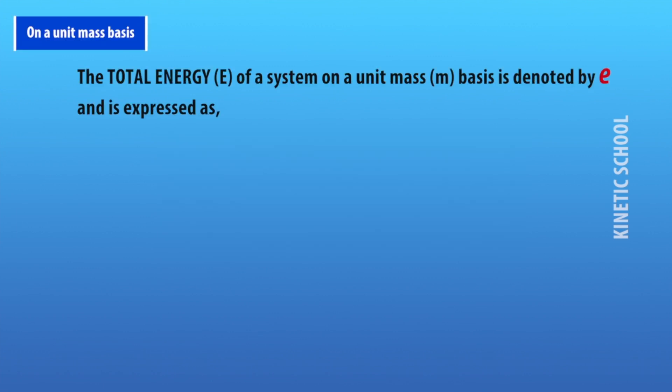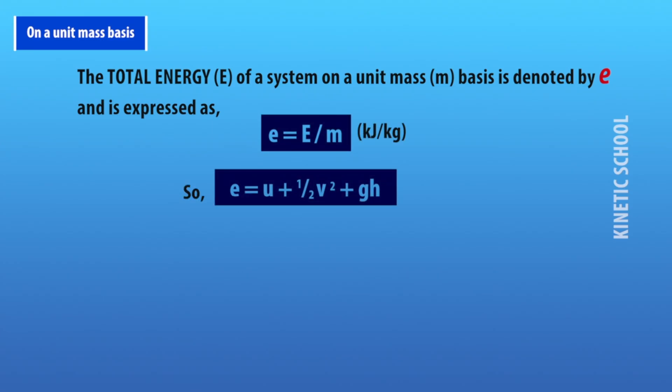The total energy of a system on a unit mass basis is denoted by lowercase e and is expressed as e = E/m. So e = u + ½V² + gH.